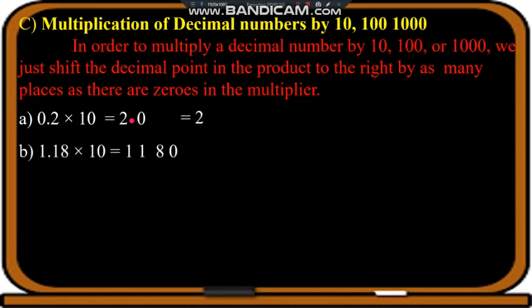Again we are having ten, so only one zero is there. The decimal will shift one place to the right — it will come after the second one, or before eight. So in simple terms we can write this as eleven point eight.